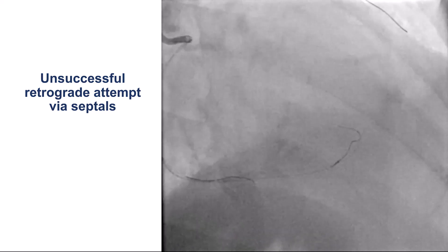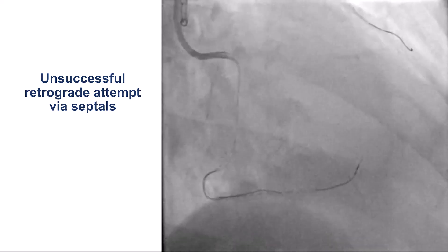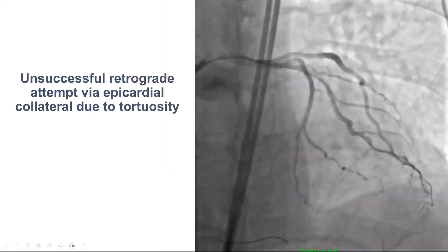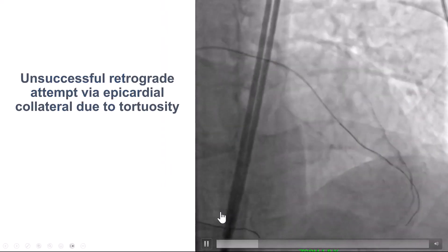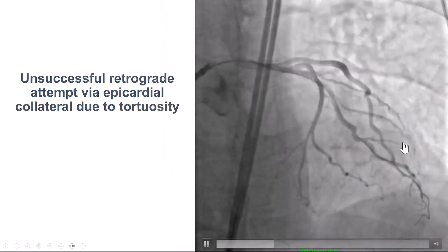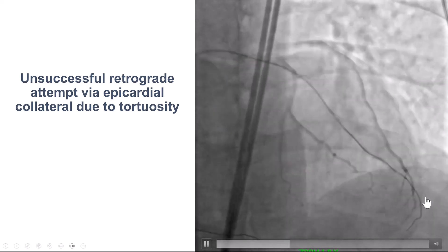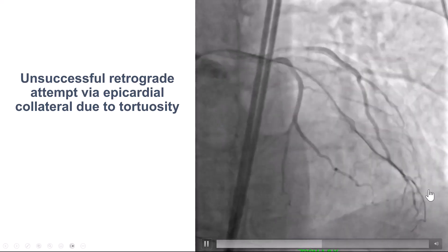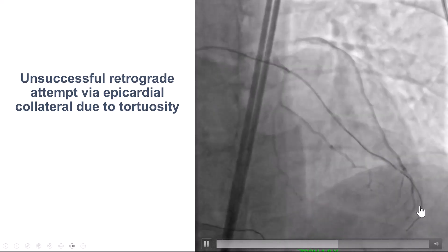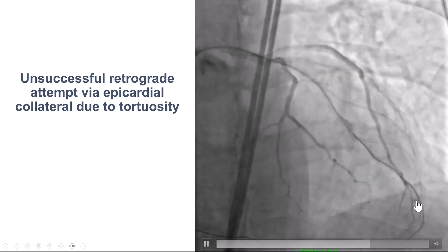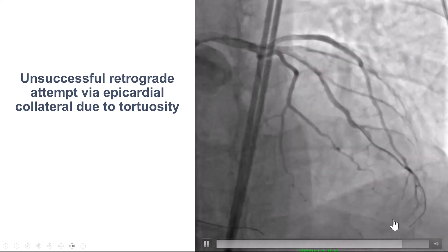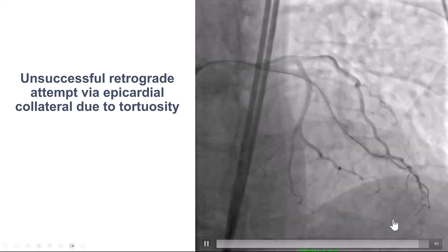We tried first retrograde, attempting the septals. Unfortunately, despite multiple wires — Suoh03 and Sionblack — we could not get through. We even tried the epicardial from the diagonal, but this was also small and tortuous, and we were unable to cross it as well.